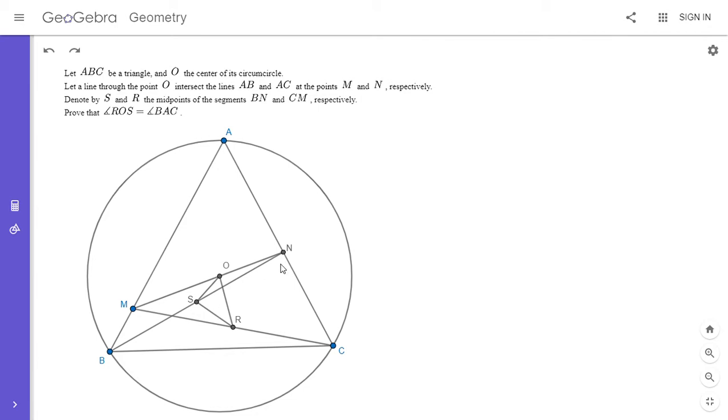If I reflect N across S, I get B. If I reflect M across R, I get C. If I reflected A across O, I would get another point, and that triangle with points B and C would be similar to both of them.